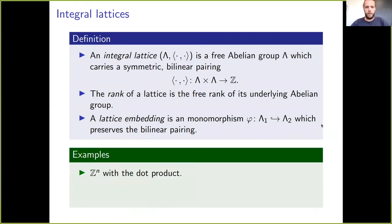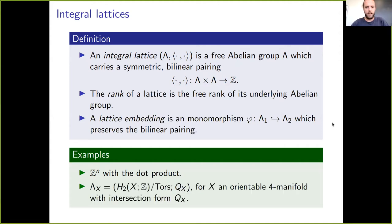For examples: there's the trivial example of Z^n endowed with the dot product, sometimes called the standard Euclidean lattice. More interestingly, whenever we have an orientable 4-manifold X, the free part of its second integral homology can be turned into a lattice using the intersection form, which measures how surfaces representing free generators intersect within X.